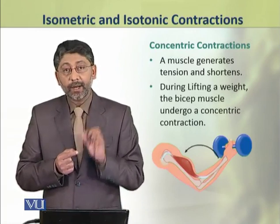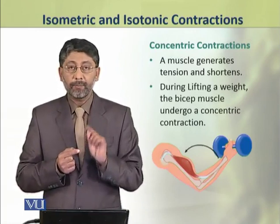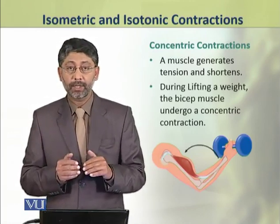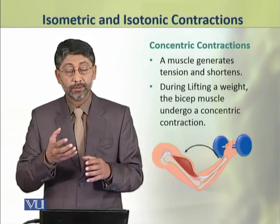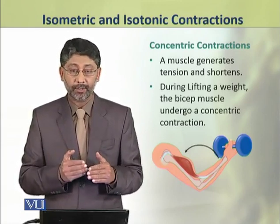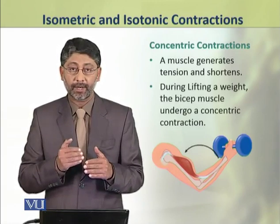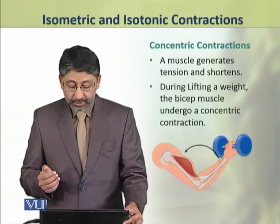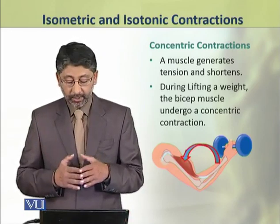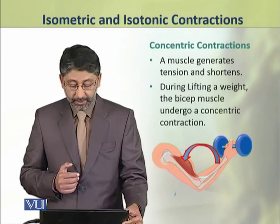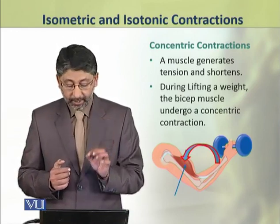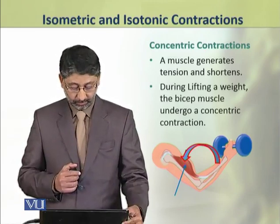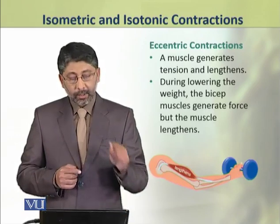Concentric contractions happen when a muscle generates tension and shortens. Most movements involving muscle force require the muscle to shorten. For example, when we lift a weight using our bicep muscles, those are concentric contractions.